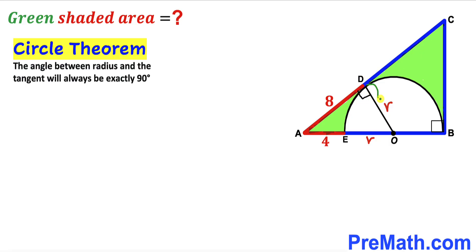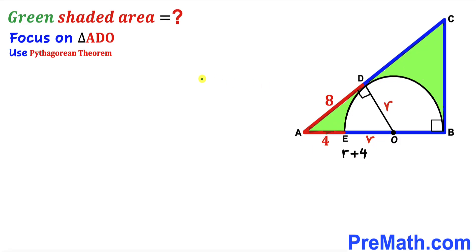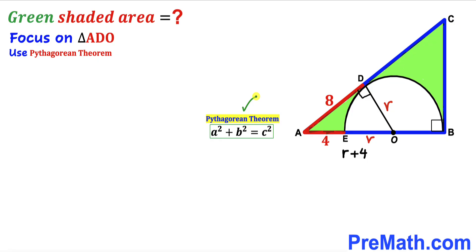So angle ADO turns out to be 90 degrees, since OD is the radius and AD is the tangent line. We now focus on the tiny right triangle ADO. The hypotenuse of this right triangle is going to be r plus 4. We will apply the Pythagorean theorem on this triangle to solve for the radius r.